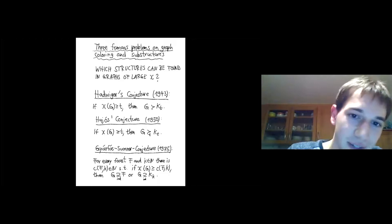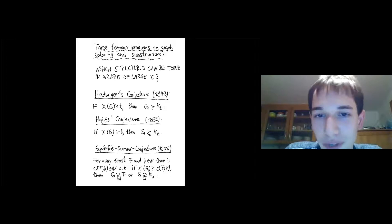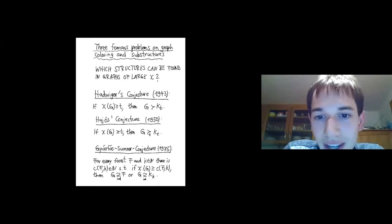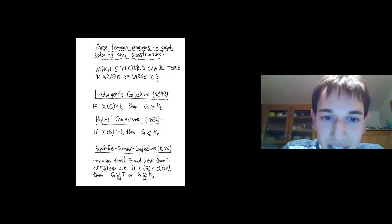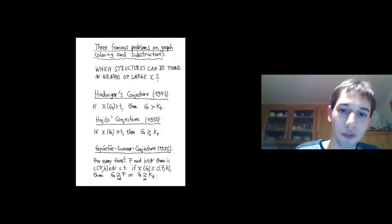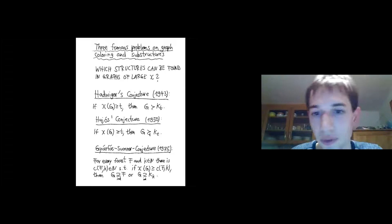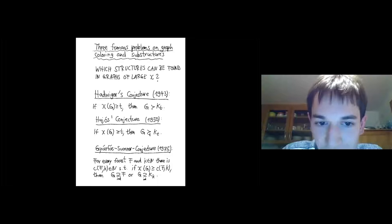The talk starts with three famous problems on graph coloring and substructures that relate the existence of substructures in graphs with large chromatic number. Computing the chromatic number is NP-hard, so we cannot hope for full structural understanding of k-color-critical graphs, but we can study necessary conditions—which substructures they must contain. The first famous problem is Hadwiger's conjecture from 1943: if a graph has chromatic number t, it must contain the complete graph on t vertices as a minor.